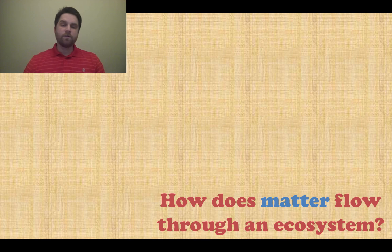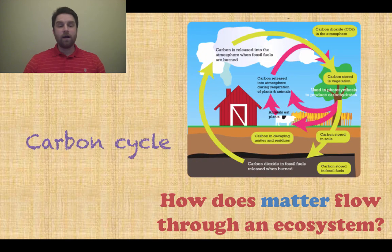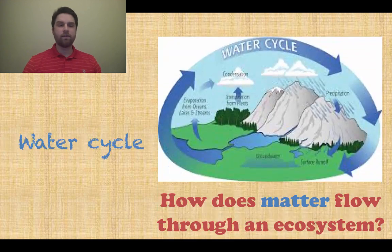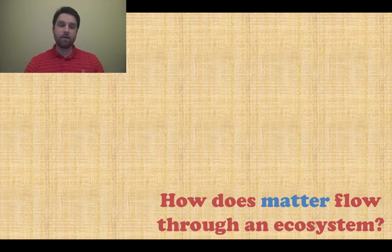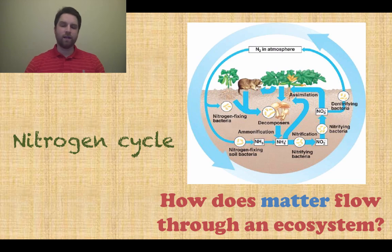How does matter flow through an ecosystem — not energy, but matter? There are three different cycles: the carbon cycle, the water cycle, and the nitrogen cycle. We're going to learn about all three of these in a later lesson.